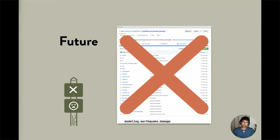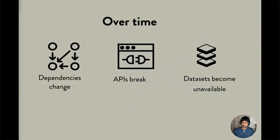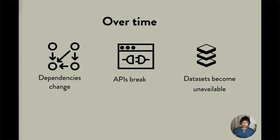A few common reasons are that others don't have access to your data, or perhaps you've made some API calls and those APIs are now unreachable. But the more likely reason is that dependencies have changed over time. The R package ecosystem is continuously evolving — functions can change their behavior or become deprecated — and someone with the same packages but different versions might not get the exact same output.